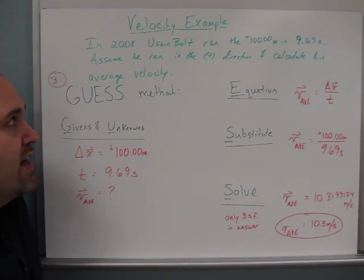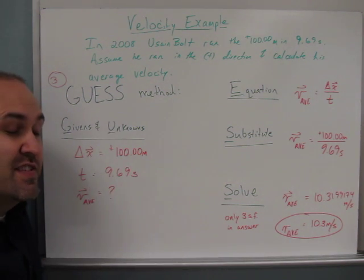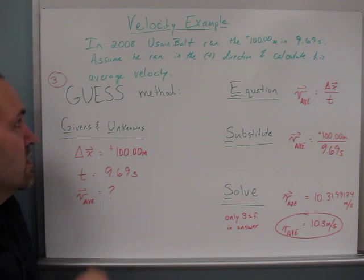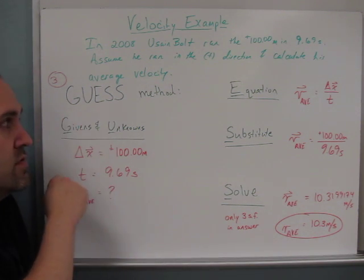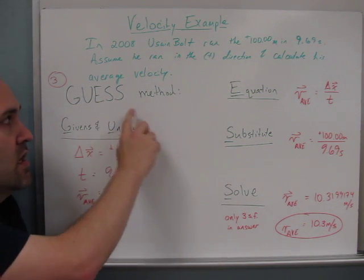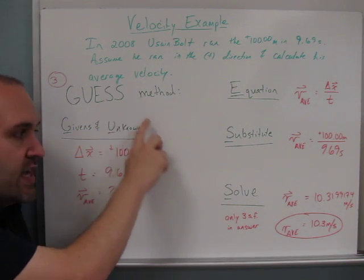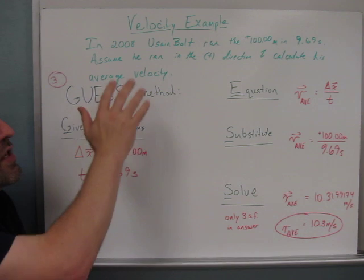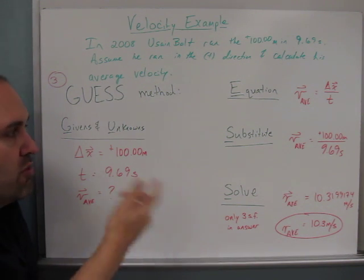I want you to calculate his average velocity, and one way to do this, and the method I'd like you to use at least to start out, is the method that we sometimes call the GUESS method. Now this isn't just guessing an answer, it's actually an abbreviation for five different words. So G and U is givens and unknowns, E is equation, S is substitute, and the second S is solve. So the first thing you should do when you see one of these word problems is to try to apply the GUESS method.